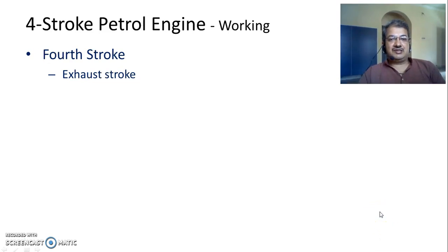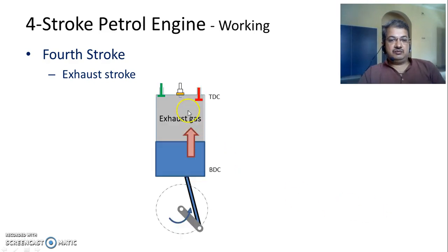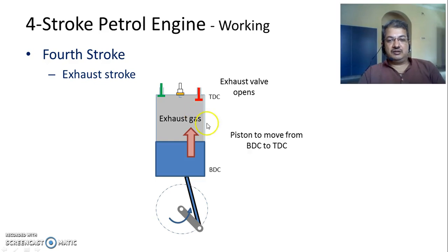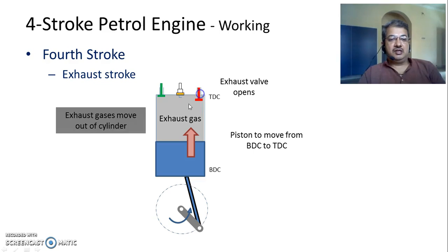The final stroke is called the exhaust stroke. Once the expansion stroke is complete, the burnt exhaust gases remain inside the cylinder. At the beginning of this stroke, the exhaust valve opens. The moment the exhaust valve opens, the exhaust gases inside the cylinder suddenly rush out of the cylinder, reducing the pressure. The remaining gases left in the cylinder are then moved out due to the movement of the piston from Bottom Dead Centre to Top Dead Centre, pushing the exhaust gases out of the cylinder.